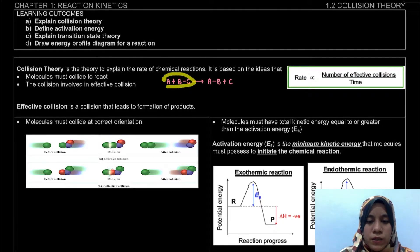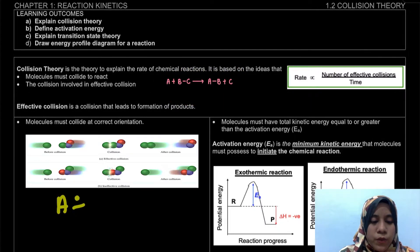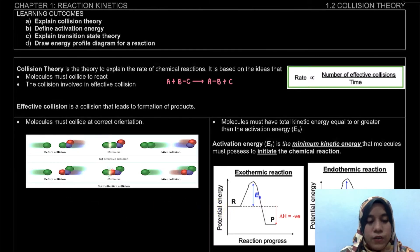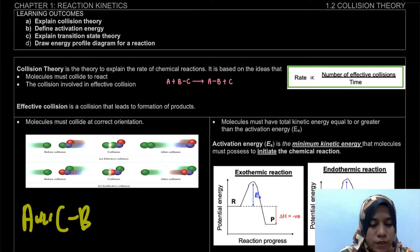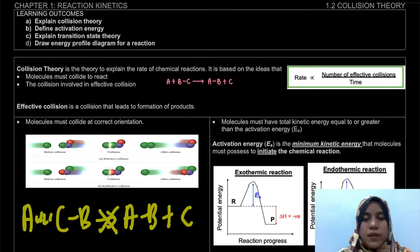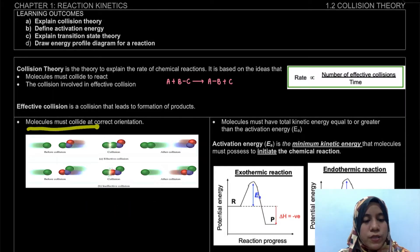For example, for this given equation: when A collides with BC at the correct orientation, we will get our product AB plus C. But if our reactant collides at the wrong orientation, we won't get AB plus C. That's why the first requirement is that the molecule must collide at the correct orientation.